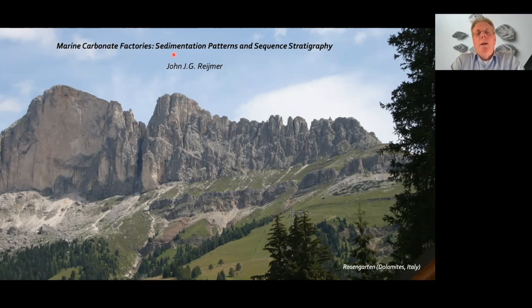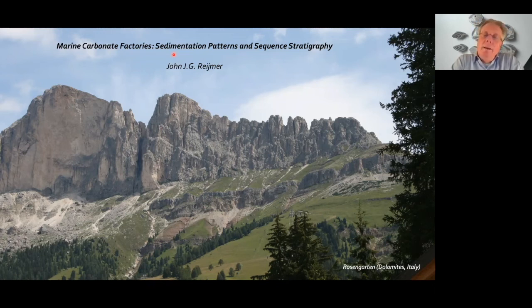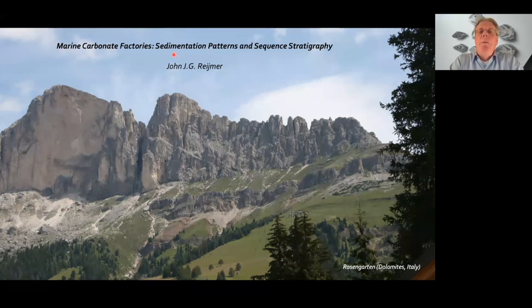It depends on the mineralogy, of course. When you compare tropical and cool water factories, the tropical ones cement very fast — you only need to expose them for five years and then they cement already. When you go to cool water ones, they behave like loose grains. So it depends on the mineralogy of the factory how diagenesis will develop. We should not forget microbes — microbes play an important role also on the Bahamas in stabilizing the upper part of the slope, forming the kind of intermediate on which carbonate can be formed. So when you look at a factory, you also get a different set of diagenetic features.